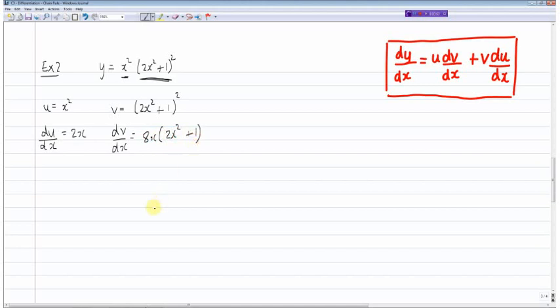Okay, so now dy/dx is equal to this multiplied by this, so it's x squared multiplied by 8x(2x² + 1), and then we add this term here multiplied by this term which is 2x(2x² + 1) all squared. And this can be simplified or kind of worked out to be 8x³(2x² + 1) plus 2x(2x² + 1) all squared.